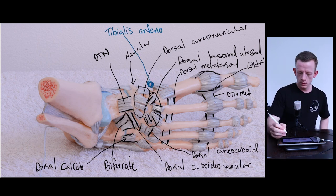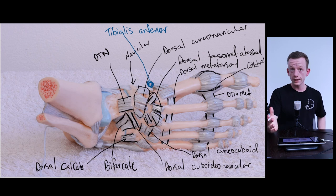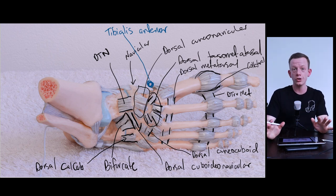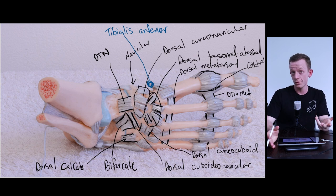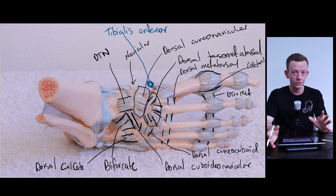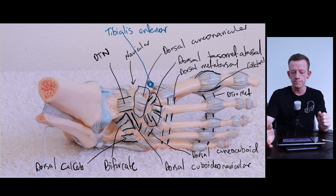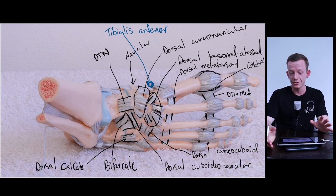This structure here that looks like a ligament is actually a muscle tendon — that's tibialis anterior. And that's all the ligaments I want to show you on these pictures. It's usually way more than what you'll need to know, but once you know the bones of the foot, you can put which bone it's going to and coming from together to form a ligament name. I hope you learned something, and I hope to see you in the next video.